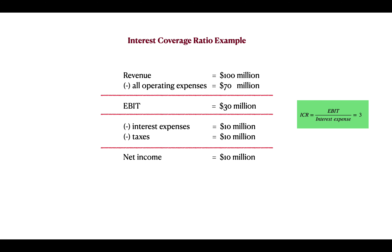An ICR of 3 means the company is earning three times its interest payment. In this case, the interest payment is 10 million dollars and the company is earning 30 million dollars before paying interest and taxes. This means the company has room to absorb lower earnings — if earnings go down next year, the company will still be able to pay its interest. The higher this number, the better the financial situation for the company.